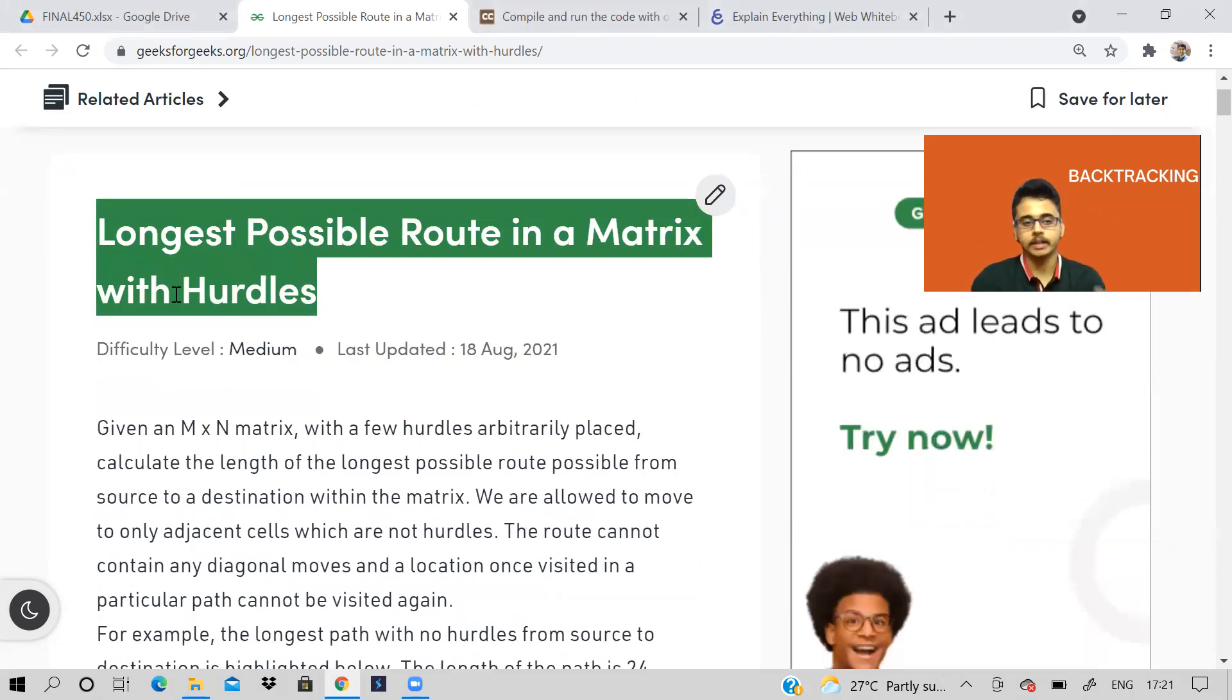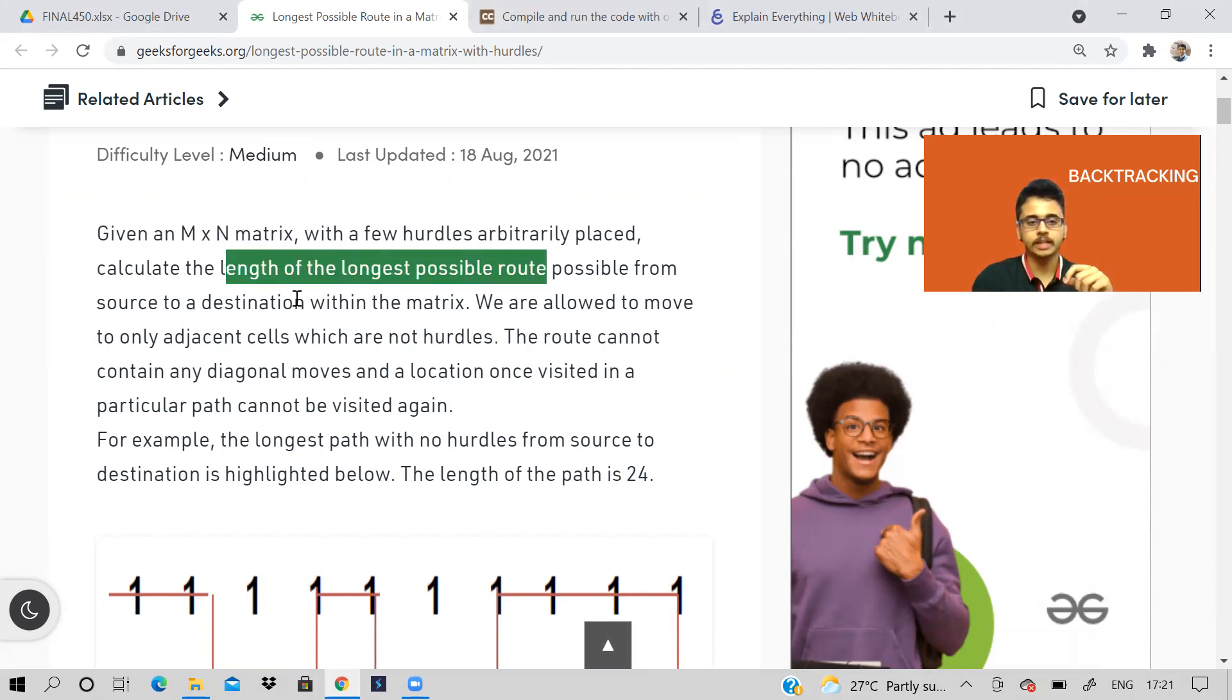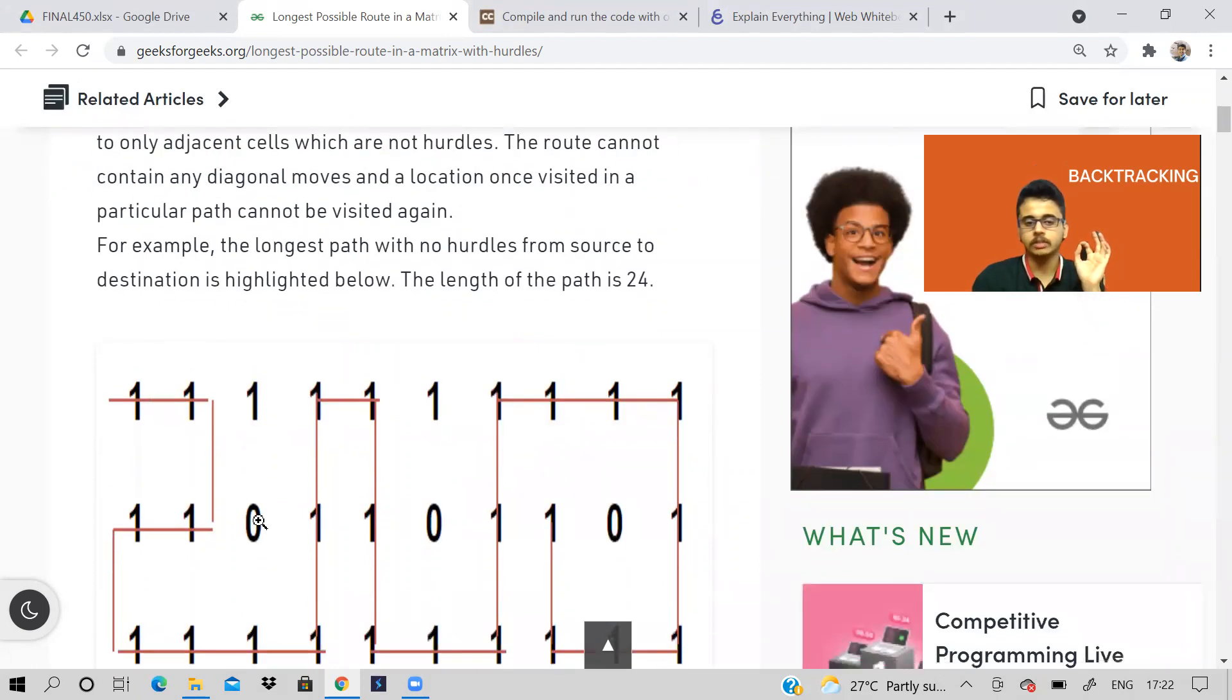Longest possible route in a matrix with hurdles. You're given m cross n matrix with a few hurdles. Calculate the length of the longest possible route from source to destination within matrix. So here you will be given input. What is the input? First of all, how many rows, how many columns, then the elements of the matrix. So elements of the matrix are going to be one or zero only. You can consider it as a binary matrix. What does one and zero represent? One means there is no hurdle in that cell. Zero means there is a hurdle.